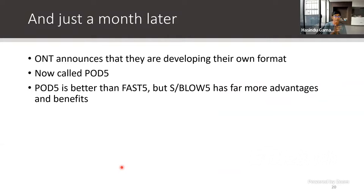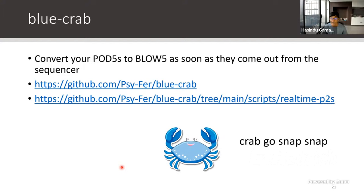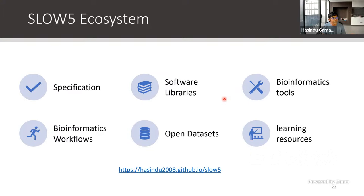We showed all this and finally published in Nature Biotechnology. Then suddenly, after about one month, Oxford Nanopore woke up and said they are developing their own file format called Pod5, which has now become the default format. While Pod5 is better than Fast5, SlowFi has many more advantages, so we keep on developing it for other researchers as well as ourselves at the Garvan Institute sequencing facility. There is a converter from Pod5 to Blow5 and Blow5 to Pod5, called Blue Crab, which is available. Now let me go into the SlowFi ecosystem — it's not just a file format; on top of it we have built a lot of other tools and methods.